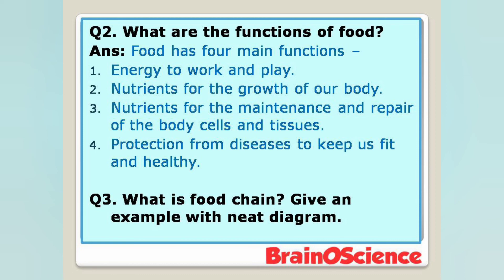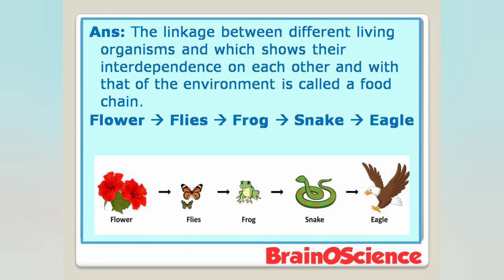Question number three: What is the food chain? Give an example with a neat diagram. The linkage between different living organisms which shows their interdependence on each other and with the environment is called a food chain. For example: flowers → flies → frog → snake → eagle. These organisms show interdependence between each other for their food and environment.